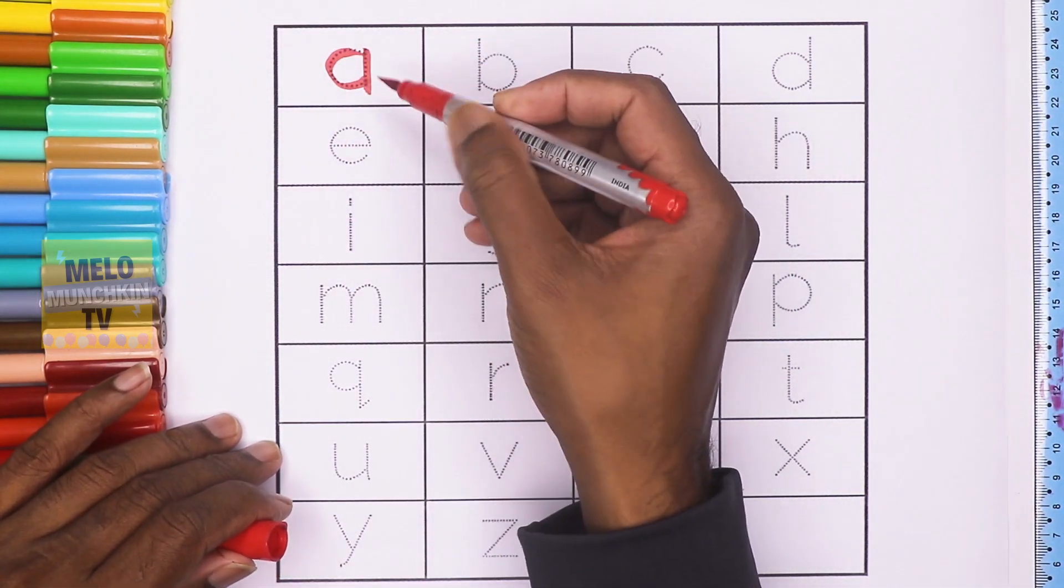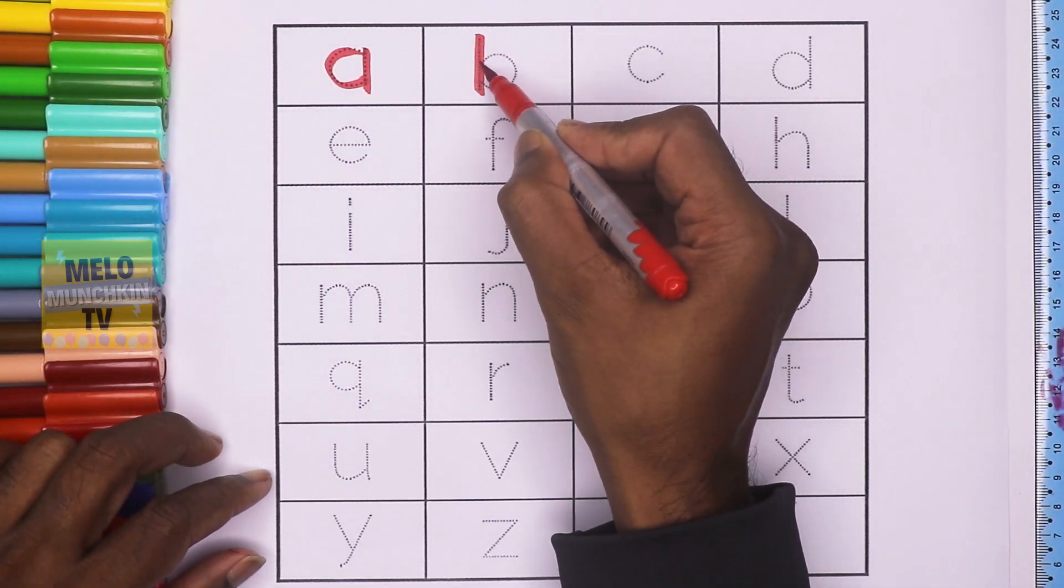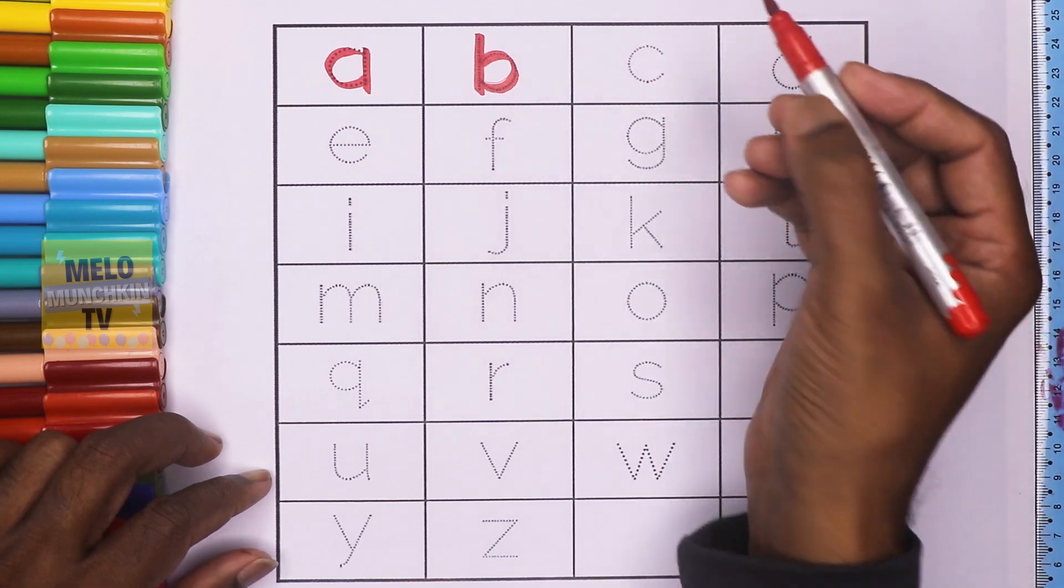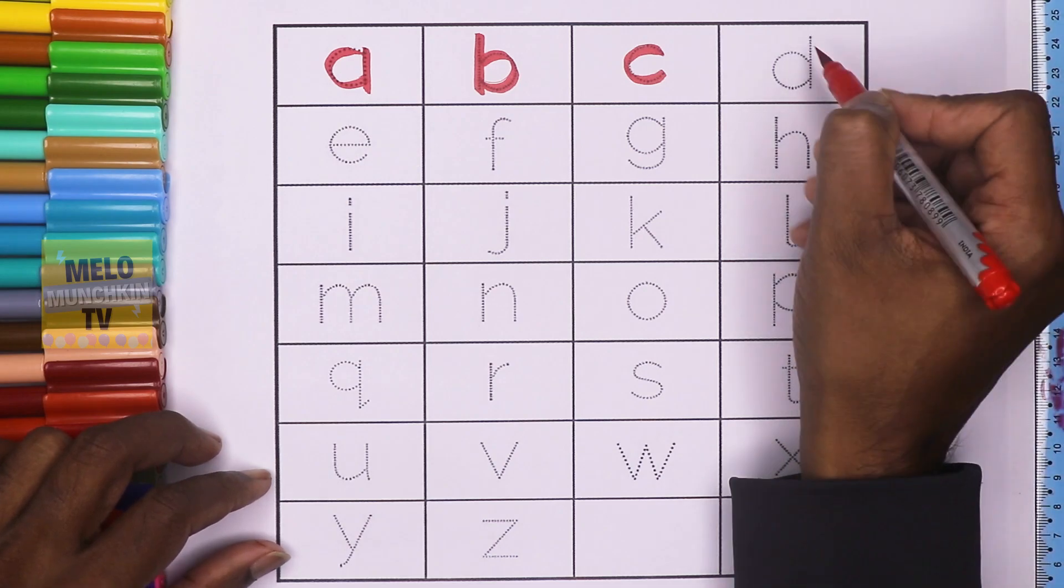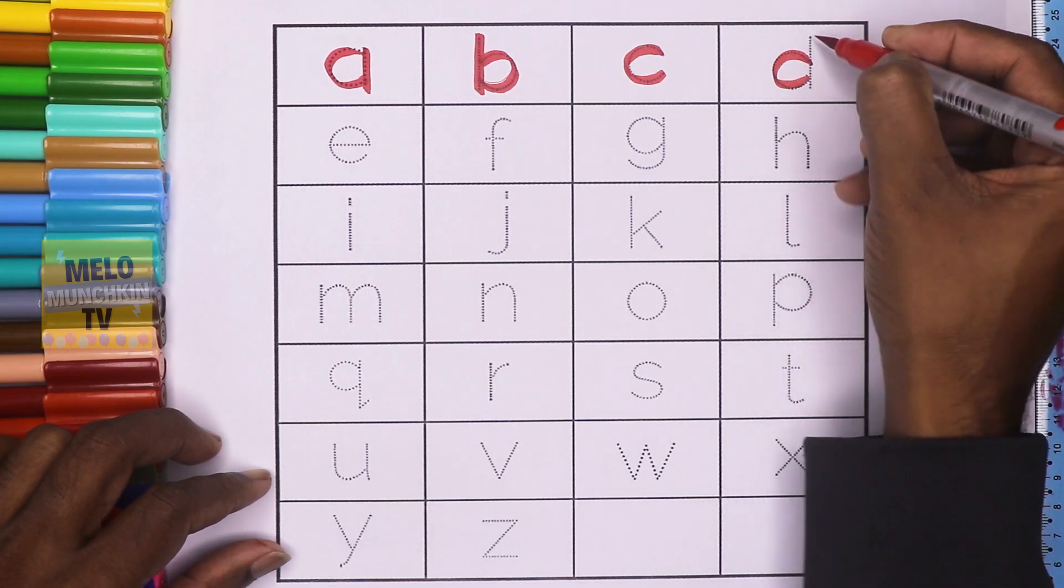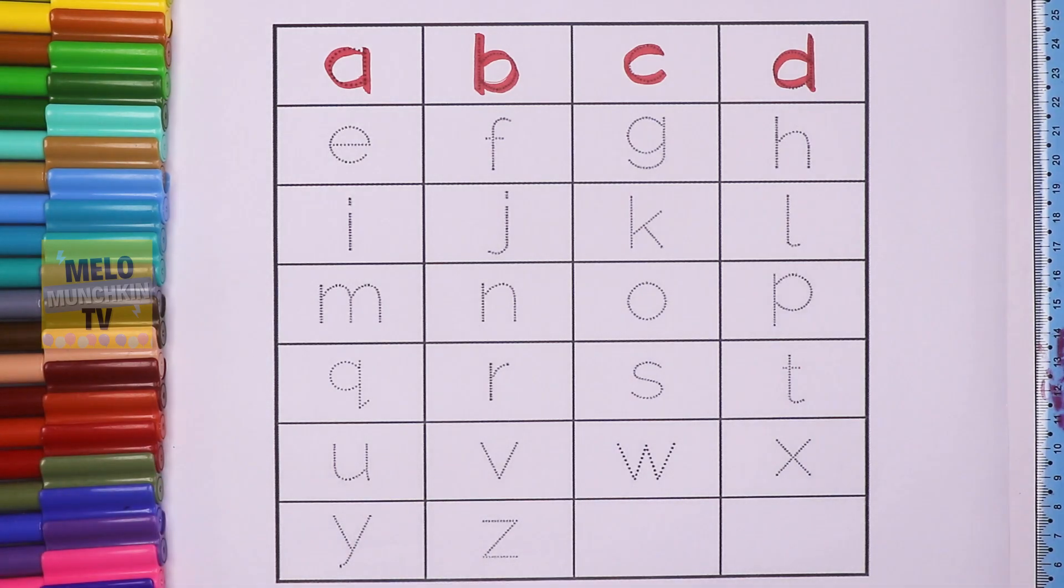A, small a. This is a, a for aeroplane. B, b for boat. C, c for cat. D, d for doll, light green color.